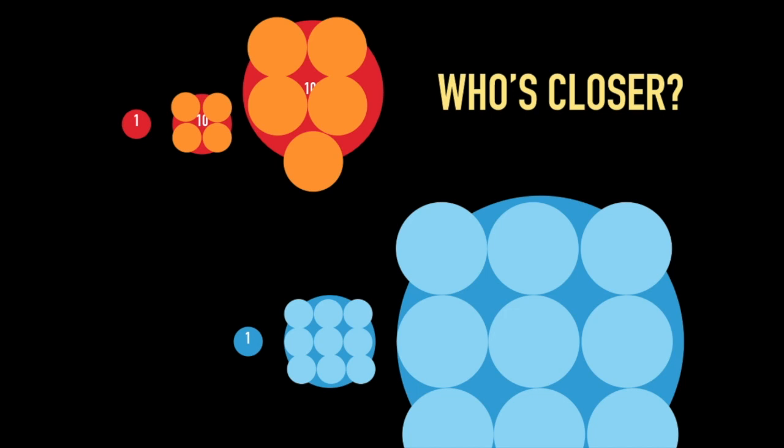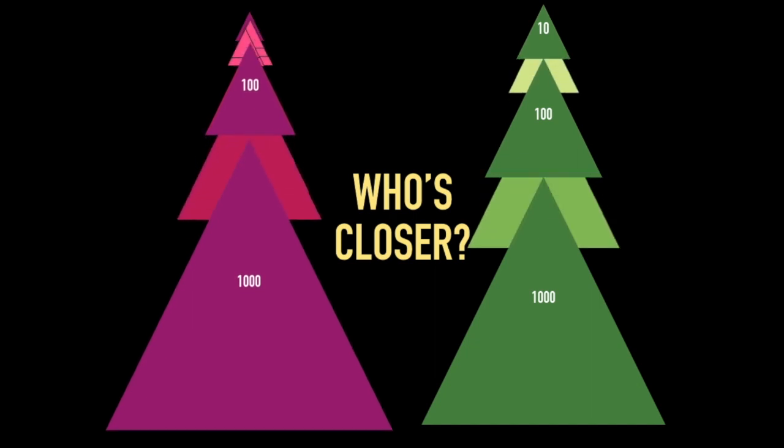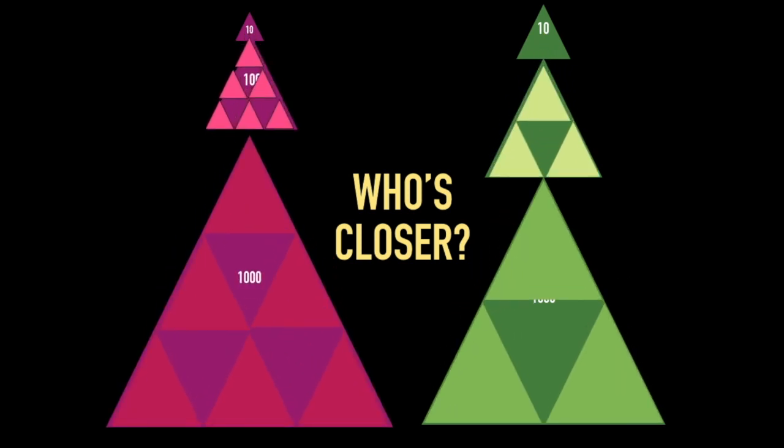Who's closer this time? Purple or green? Again, tell your elbow partner. This time, purple was really close, at about nine times larger. But green was only four times larger.